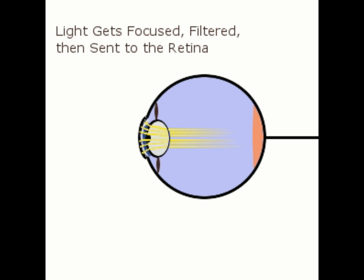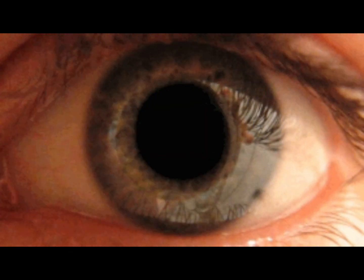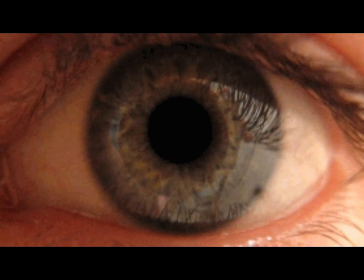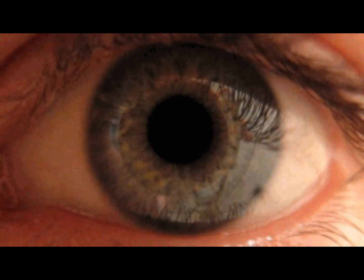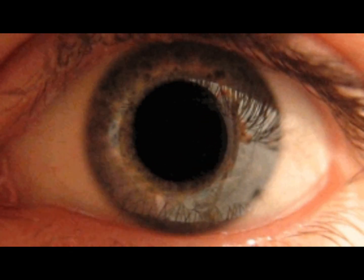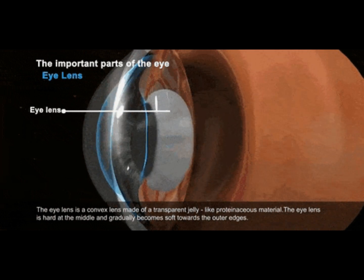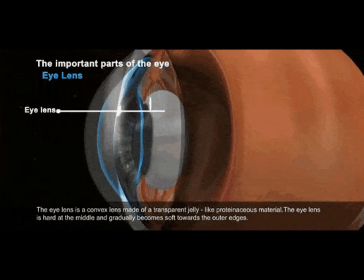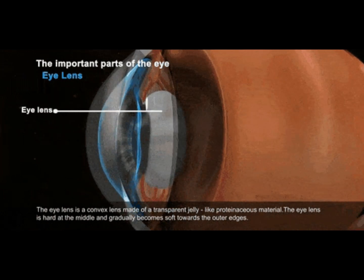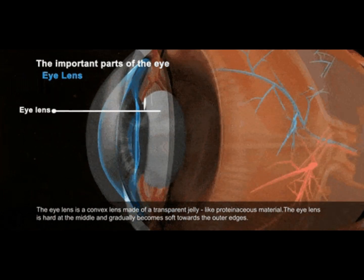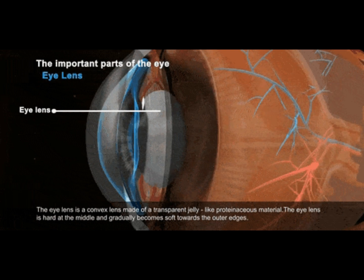In keratoconus, the cornea is irregular and cone-shaped, causing light rays to enter the eye at different angles and not focus on one point on the retina, but on many different points, causing a blurred and distorted image.